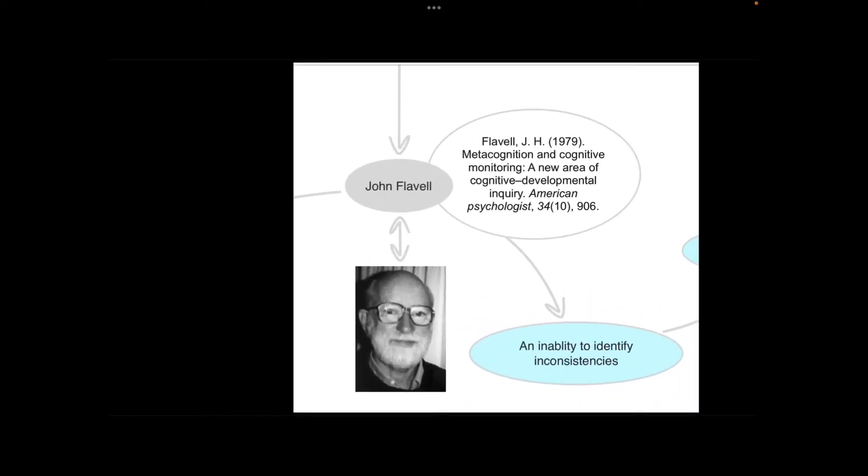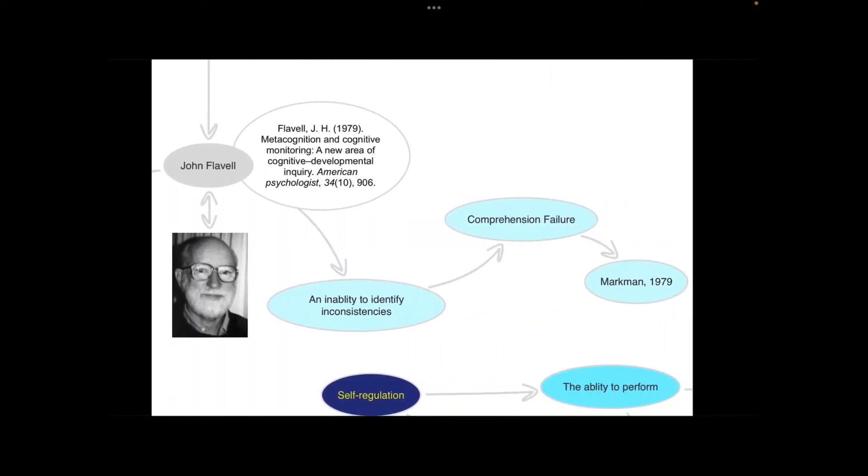The fundamental definition of metacognition came from John Flavel in 1979. He was investigating the inability to identify inconsistencies, or this idea of comprehension failure which was first described by Marksman in 1979. This is related to regulation, but I'll come back to that in a second.